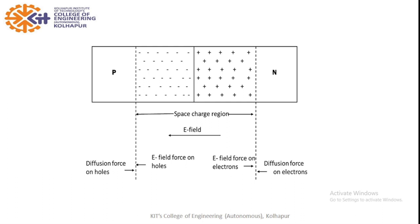Now see this p-n junction diagram. On the p-side there are more holes — higher concentration of holes. So the concentration of holes decreases in the direction from p to n. On the n-side there is higher concentration of electrons, so electron concentration decreases toward the p-side. This gives rise to a concentration gradient, and due to this concentration gradient there is diffusion current — so diffusion current is due to majority carriers.